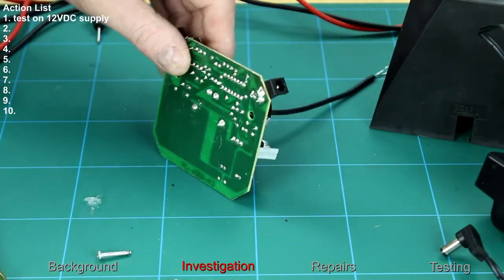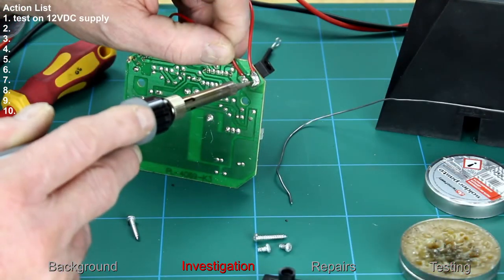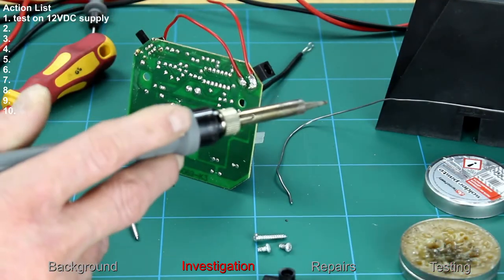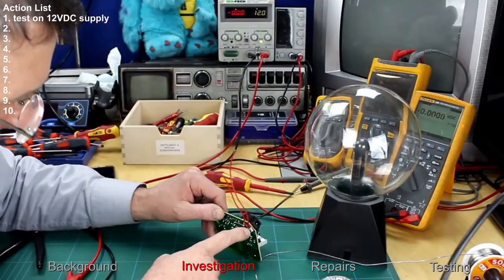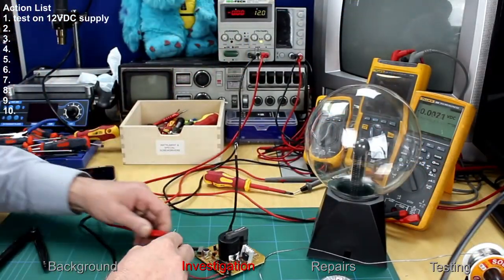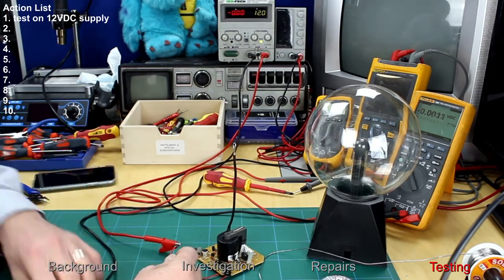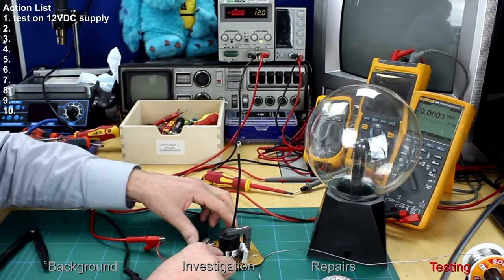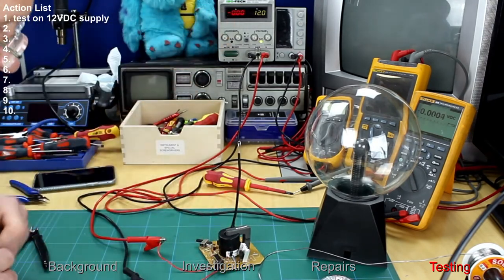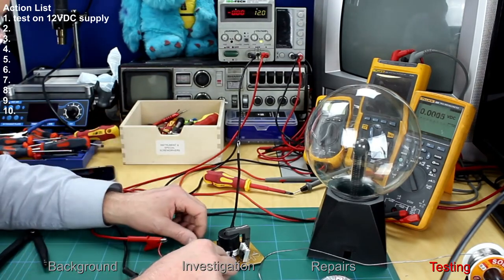I'll solder a couple of leads onto here to connect the 12 volt supply onto. So the positive is the center pin. Hook that up. Negative. That's our 12 volts connected. It's not pulling any current at the moment. So make sure I don't get my hands too close to that. Switch it on.